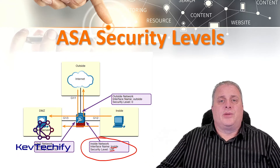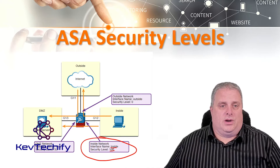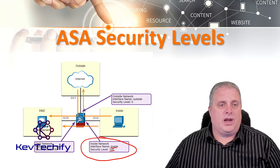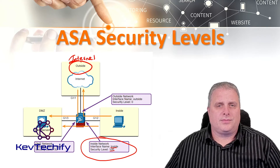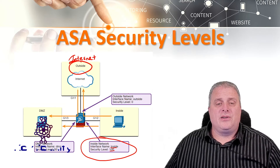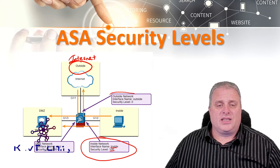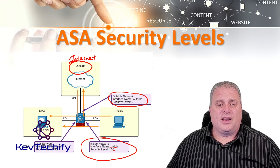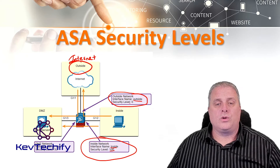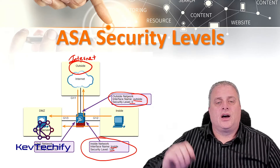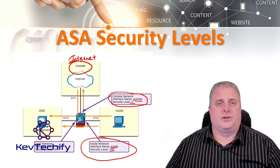Level 0 can be assigned to the outside network — think of this as the wild, wild west of the internet. For that outside interface connected to the outside network, we give it a simple name we can remember, like 'outside', and we give it the lowest possible trustworthiness score of 0.